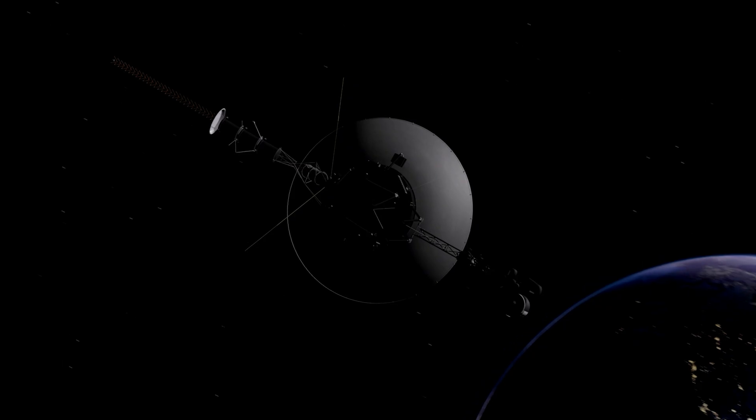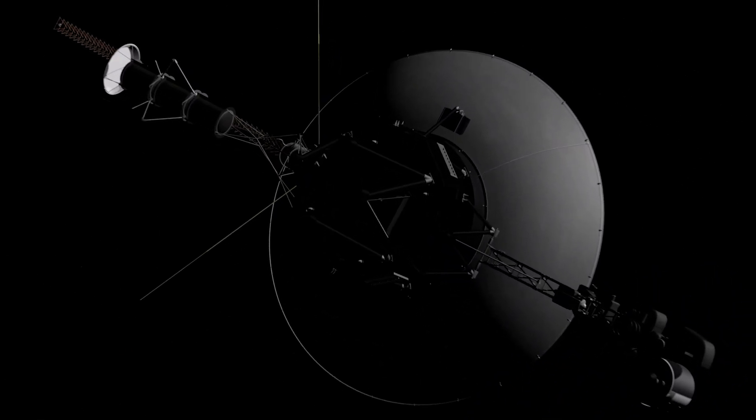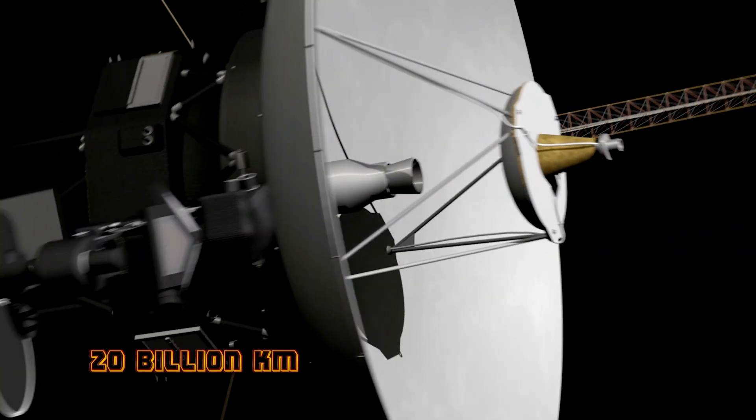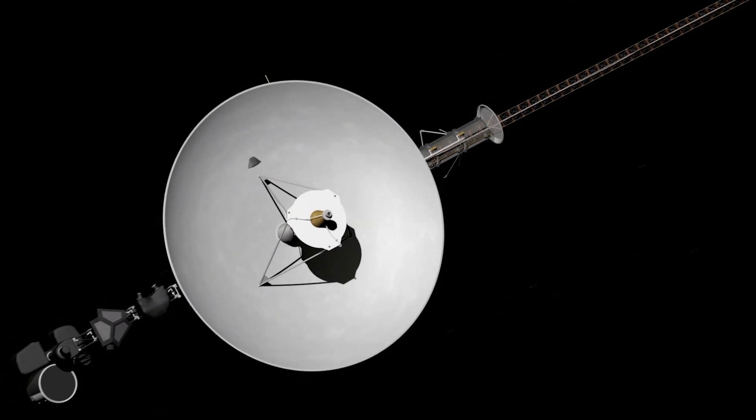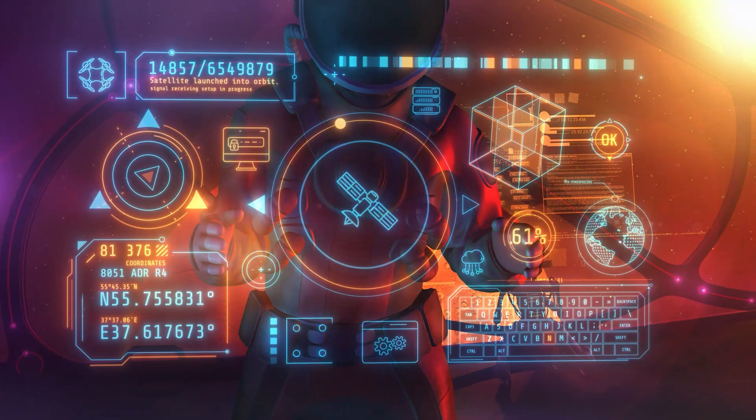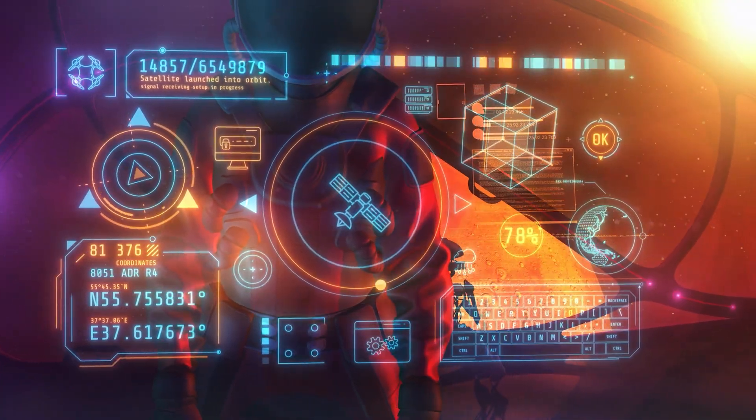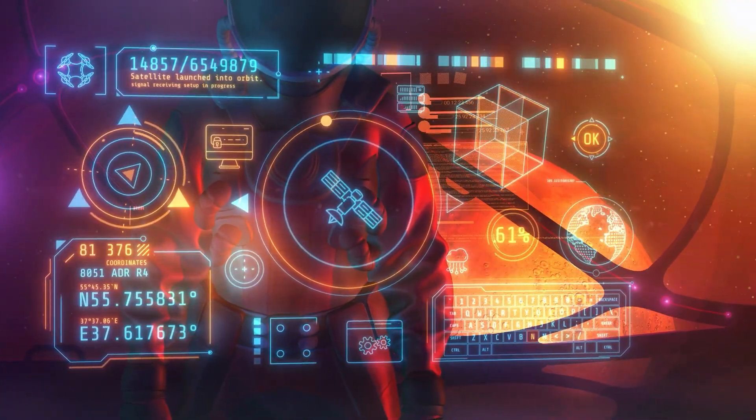There is also talk of reprogramming Voyager 2, which is about 20 billion kilometers away, to adjust its orientation to gather more data from a different perspective. Some private space agencies are even proposing long-term plans for interstellar probes that could follow Voyager's path and investigate further. The discovery might fast-track such missions.